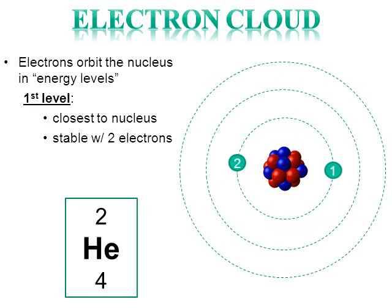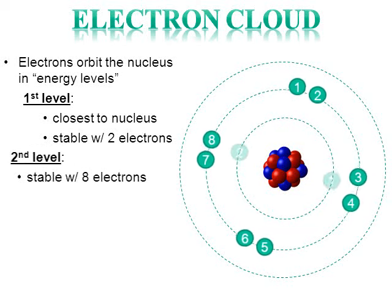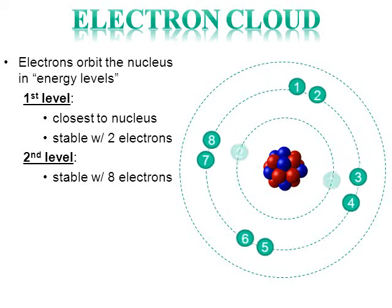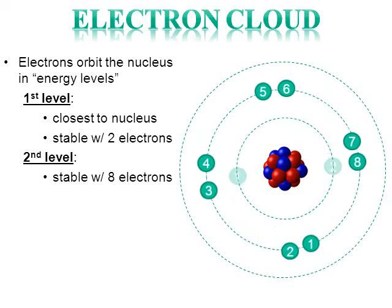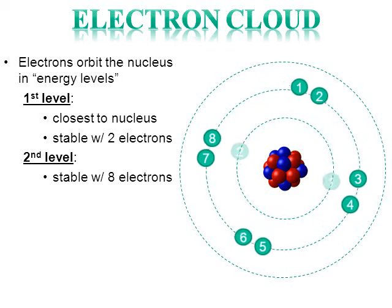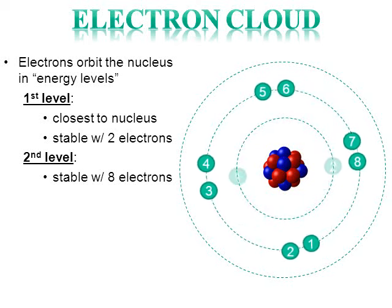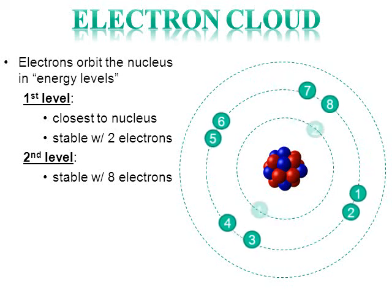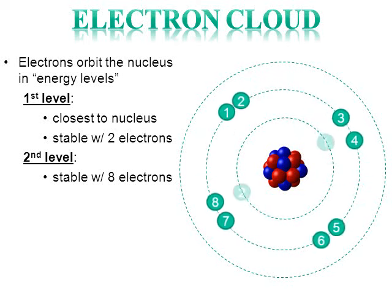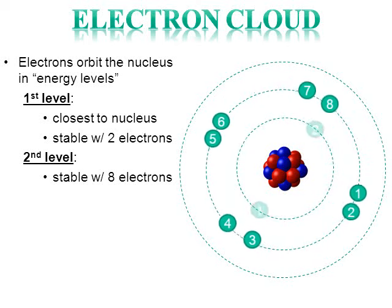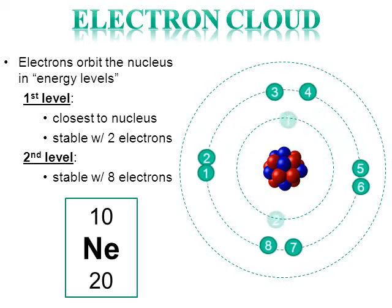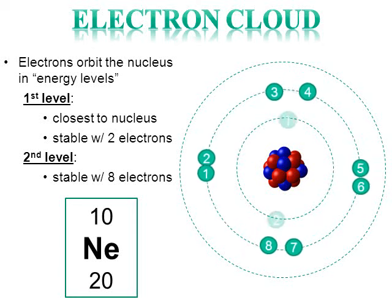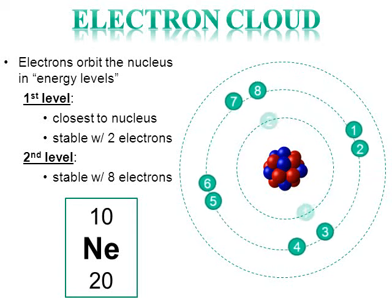Moving on to the second level. The second level can hold and be stable with a total of eight electrons. If it has fewer than eight electrons, then that atom is not stable — that's going to be an important part of this video going forward. The picture happens to be the atom of neon. Neon has a total of ten electrons: two electrons in level one and eight electrons in level two. Two plus eight adds up to the ten electrons that neon has.